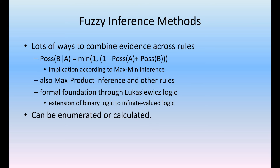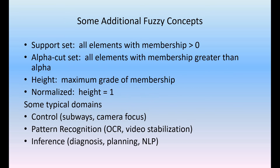The fuzzy inference method combines evidence across rules. Possibility of B given A equals the minimum of (1 minus possibility of A) plus possibility of B. It can be enumerated and calculated — this is the implication according to min-max inference, or max-product inference, and other rules. This provides a formal foundation through Łukasiewicz logic, which is an extension from binary logic to infinite-value logic.